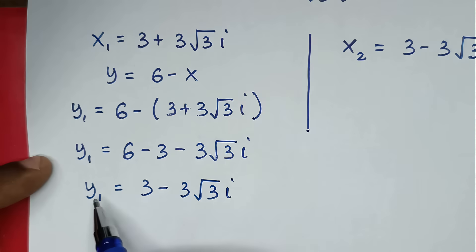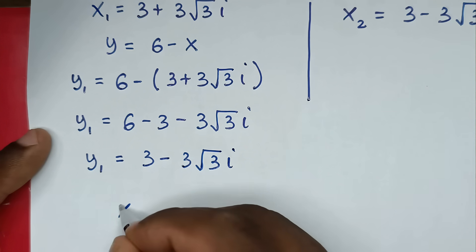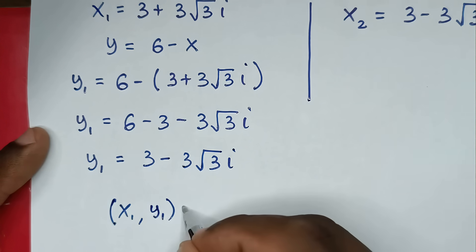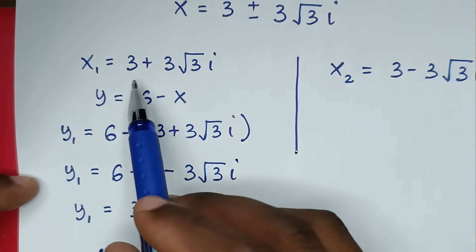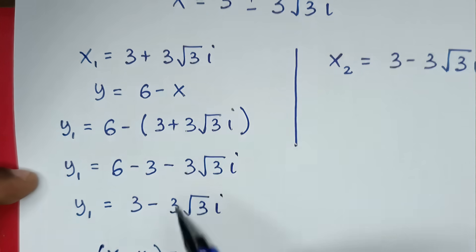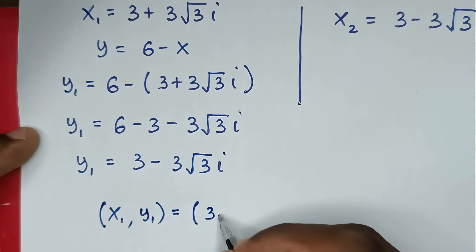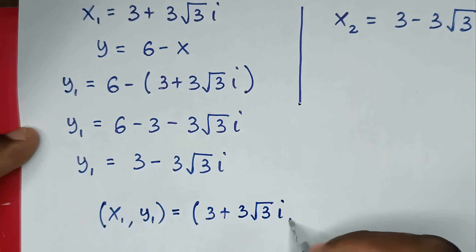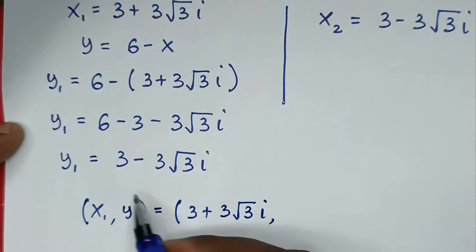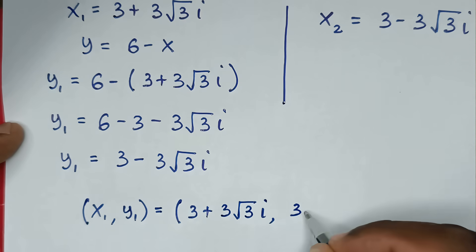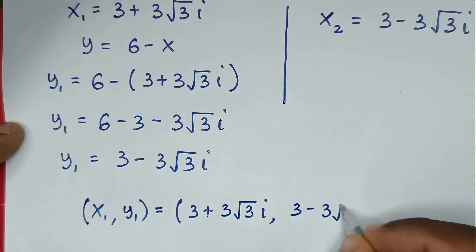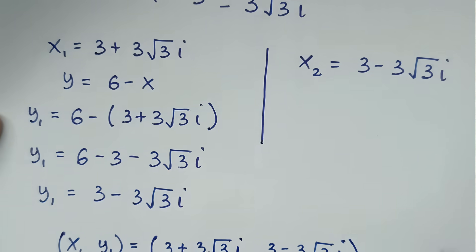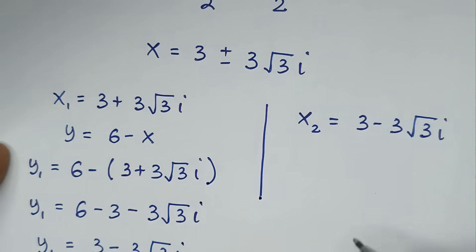So the first solution is x₁ comma y₁ equals bracket 3 plus 3 square root of 3i, comma 3 minus 3 square root of 3i bracket.